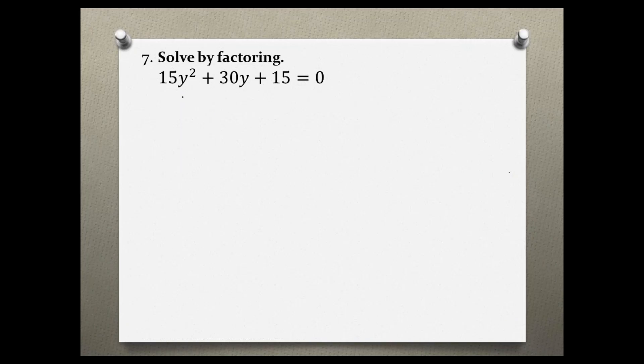Before I decide on a factoring method, I will try pulling out the GCF because I noticed that 15, 30, and 15 share a greatest common factor. In this case, the greatest common factor would be 15, as all three numbers are divisible by 15.